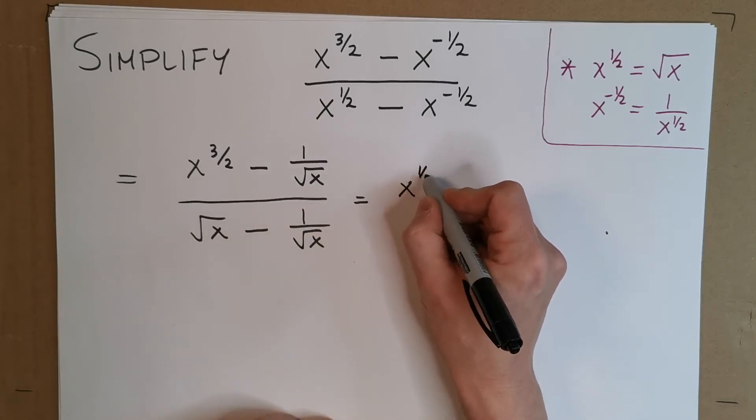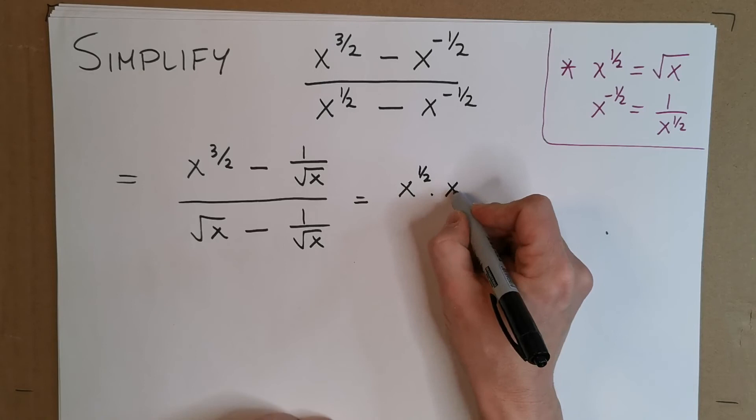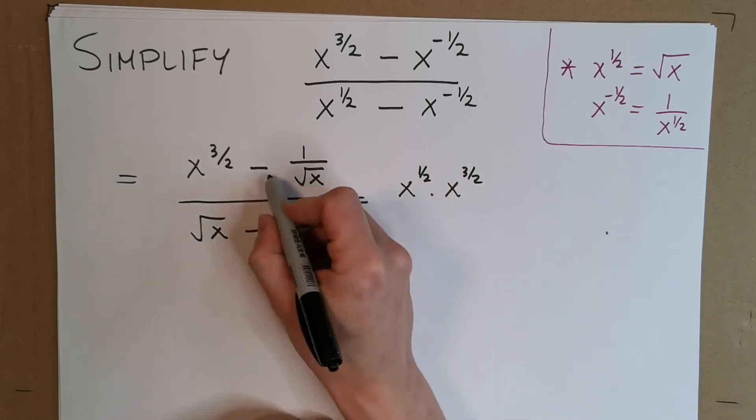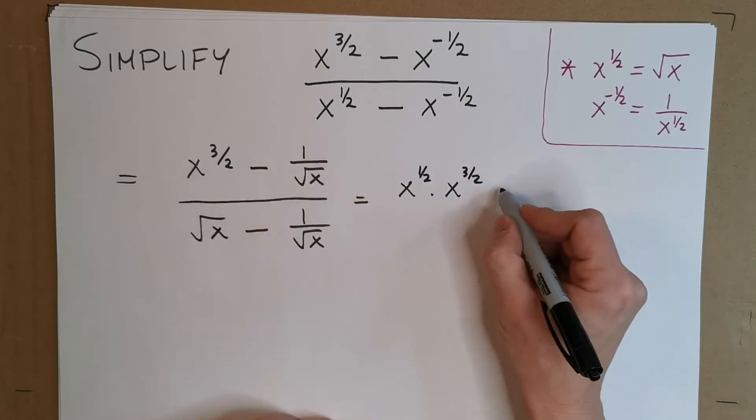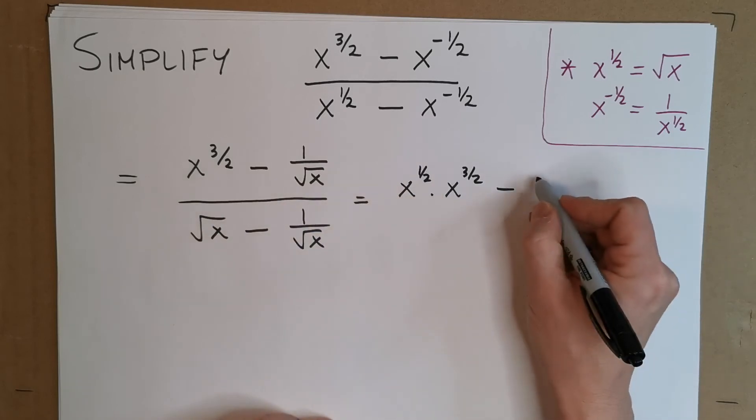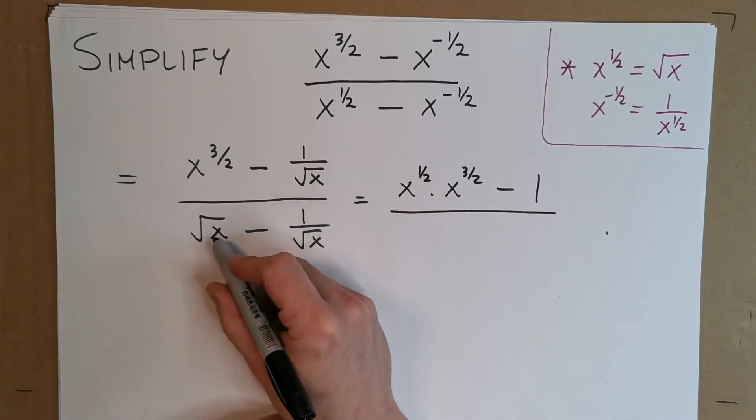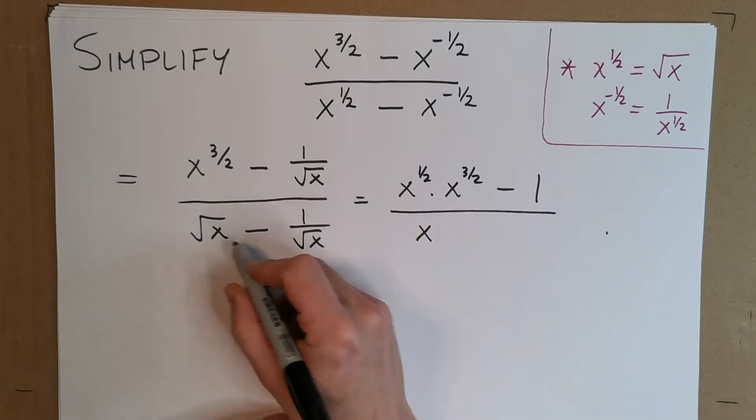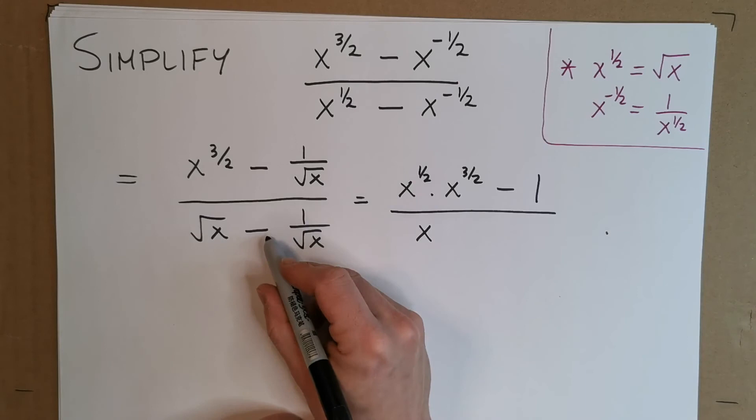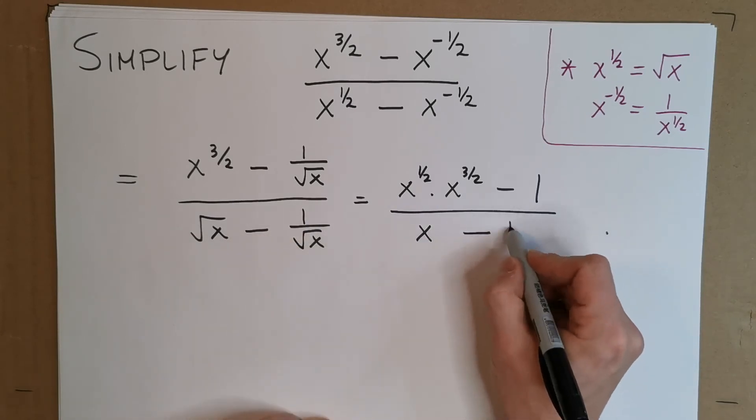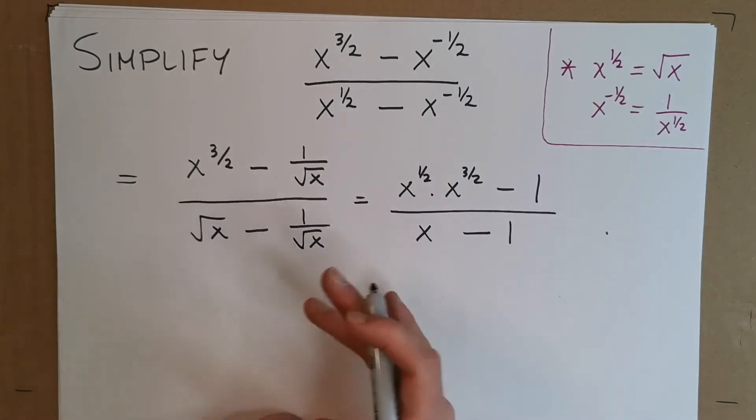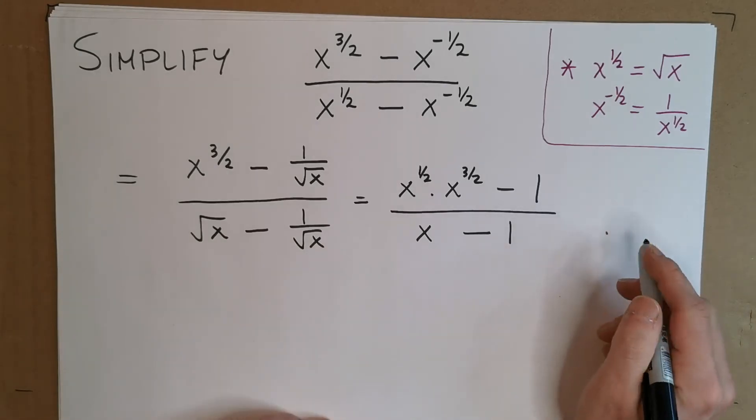So that's x to the half times x to the 3 over 2. When we multiply this thing by square root of x, it's going to be root x over root x, just leaves us with 1. And then to the bottom, well what's root x by root x? That's just going to be x, because it's like square root of x squared. And again, multiply this by root x, that ends up being 1 also. Ok, almost there, so what's next?